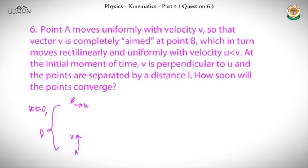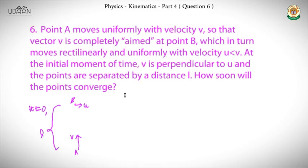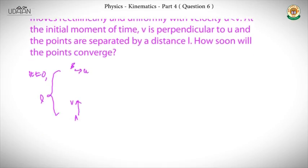The next question deals with the concept of velocity of approach, explained in the theory earlier. Point A moves uniformly with velocity v, always aimed directly at point B. Point B moves rectilinearly and uniformly with velocity u, where u < v. At the initial moment, v is perpendicular to u and the points are separated by distance l. We need to find how soon the points converge.